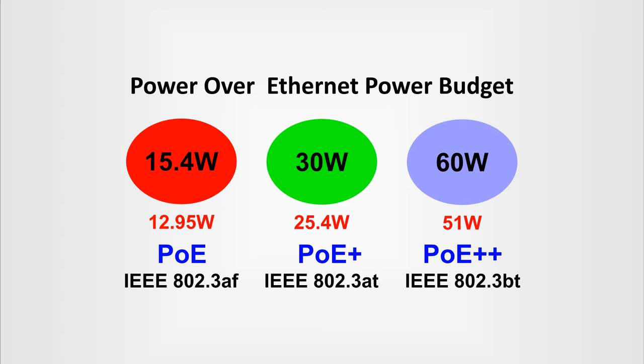PoE switches generate 15 W per port, PoE+ switches generate 30 W per port, and PoE++ switches generate 60 W per port. These are maximum values; practically we should use 12.95 W per port for PoE, 25.5 W per port for PoE+, and 51 W per port for PoE++ switches, since some power is dissipated in the cables.